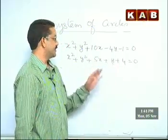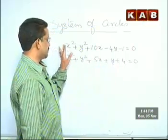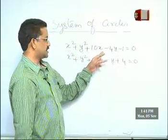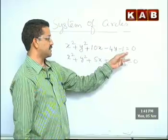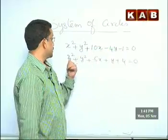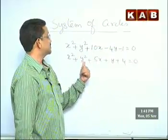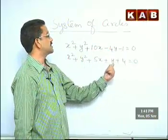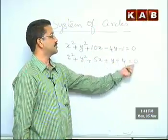The problem involves two circles: x² + y² + 10x − 4y − 1 = 0 and x² + y² + 5x + y + 4 = 0. We need to find the limiting points.